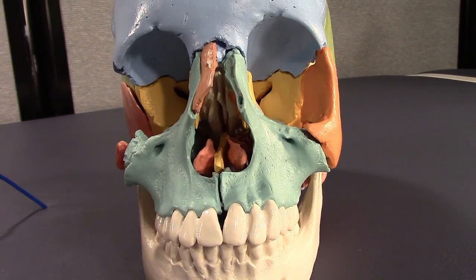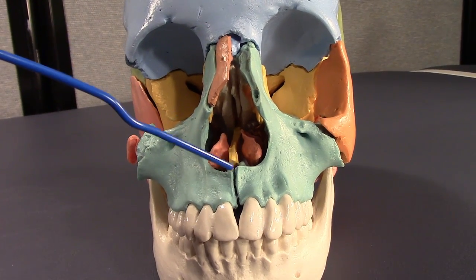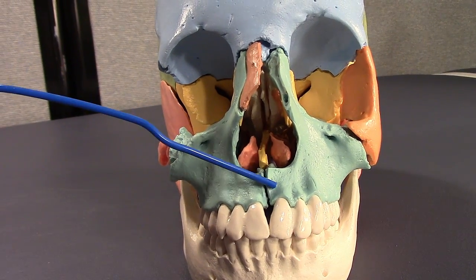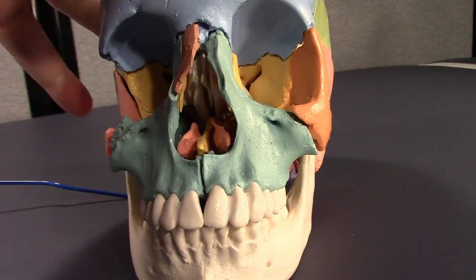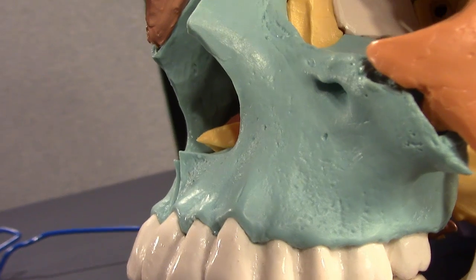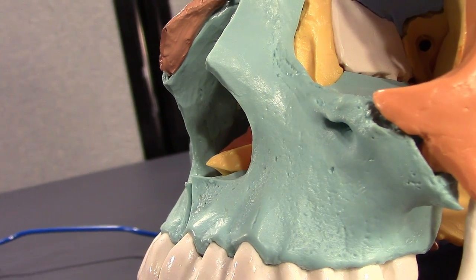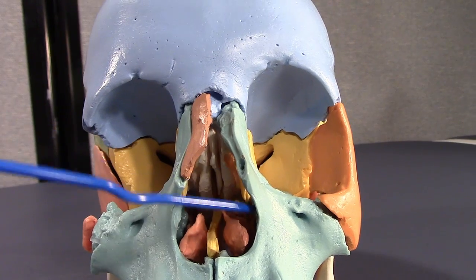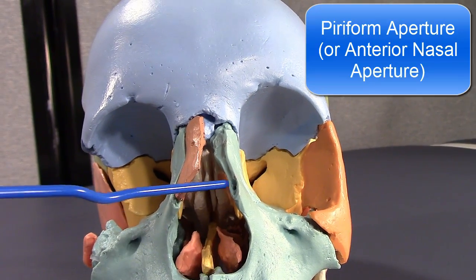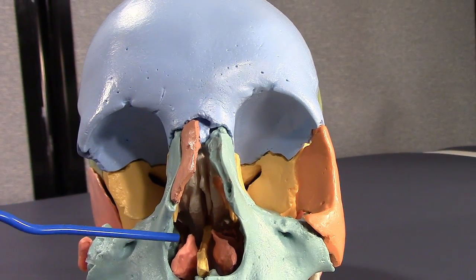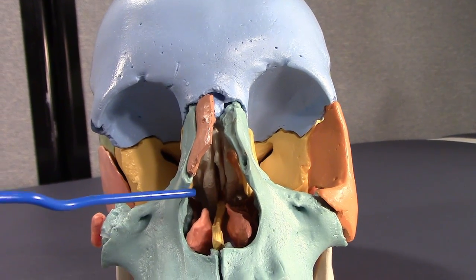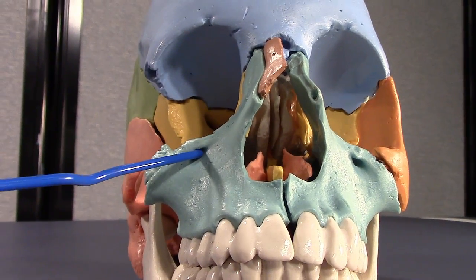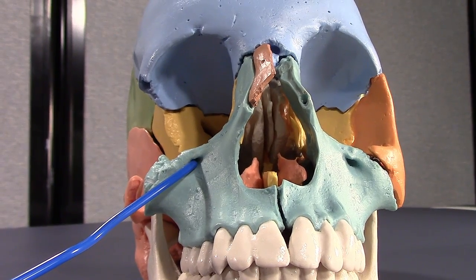Here's the anterior intermaxillary suture right here, and it goes over these little bumps — those are the anterior nasal spines of the maxilla. The nose opening, which we don't call a nose hole — it's called the piriform aperture — is formed by the nasal notches, the nasal notch of the maxilla. There's also a foramen here, visible on the other side as well — that's the infraorbital foramen.